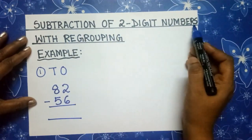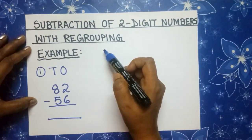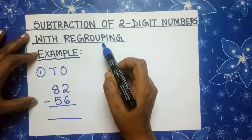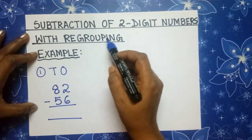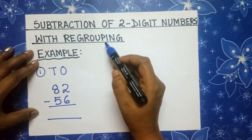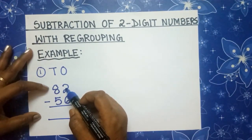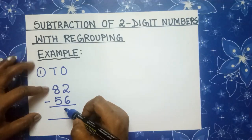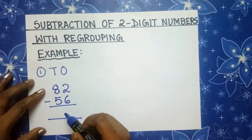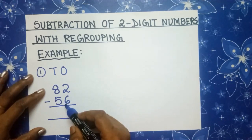Subtraction of two-digit numbers with regrouping. In addition, regrouping is known as carryover. And in subtraction, regrouping is known as borrowing. For example, 82 minus 56. First we have to subtract the 1s. Can we do 2 minus 6? No, we can't.